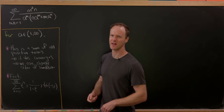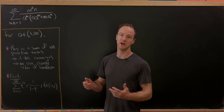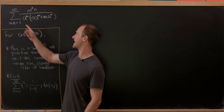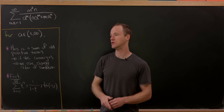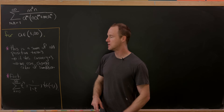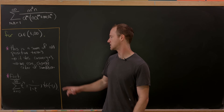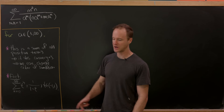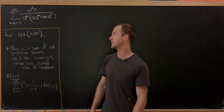We can check that this converges using series convergence tests for double series — a clue being that we have exponential terms in the denominator and polynomial terms in the numerator. Also, this is a sum of positive terms, so it absolutely converges, which means we can change the order of summation. We'll also use the sum of a geometric series formula.